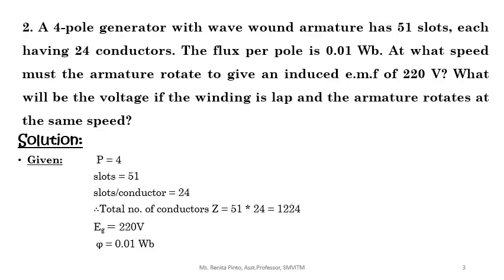Let's go to the second problem. A 4-pole generator with wave wound armature has 51 slots, each having 24 conductors. The flux per pole is 0.01 Weber. At what speed must the armature rotate to give an induced EMF of 220 volts? What will be the voltage if the winding is lap connected and the armature rotates at the same speed? Let us understand this problem and write the given data.